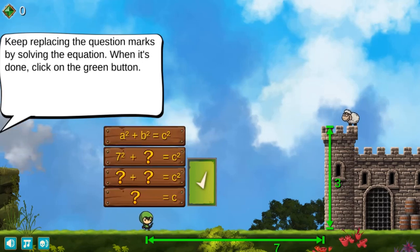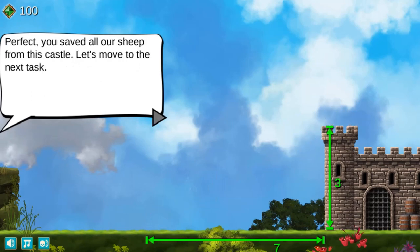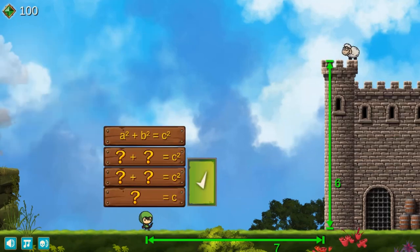To save the sheep, insert values into the formula by using the mouse to click on the question marks, then click on the corresponding values to insert the right answers. Complete the formula and click on the green button to submit.